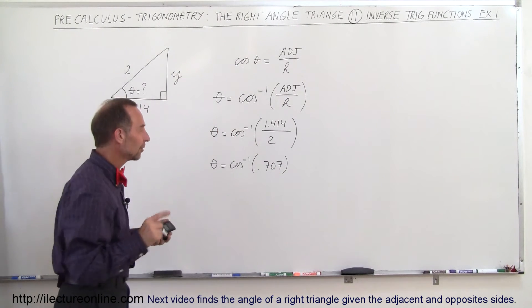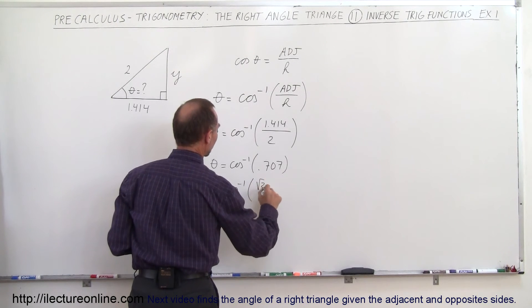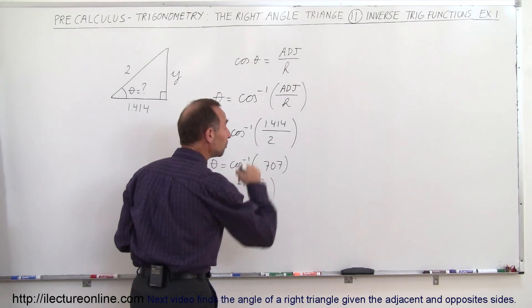Ah, that should ring a bell, because that is equal, theta, that's equal to the arc cosine of the square root of 2 over 2, because the square root of 2 over 2 is 0.707.